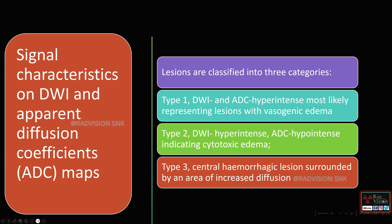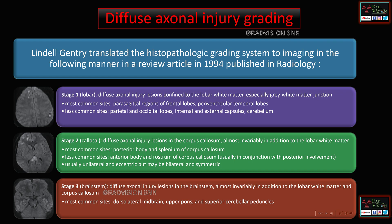Based on signal characterization of DWI and ADC, DAI lesions can be classified into three types: Type 1 — DWI and ADC hyperintense, most likely representing vasogenic edema; Type 2 — DWI hyperintense and ADC hypointense, indicating cytotoxic edema; Type 3 — central hemorrhagic lesions surrounded by an area of increased diffusion.